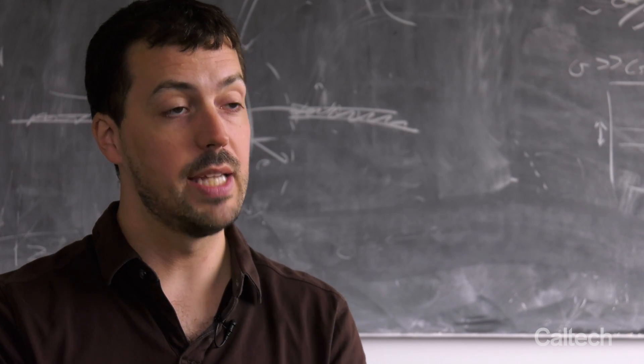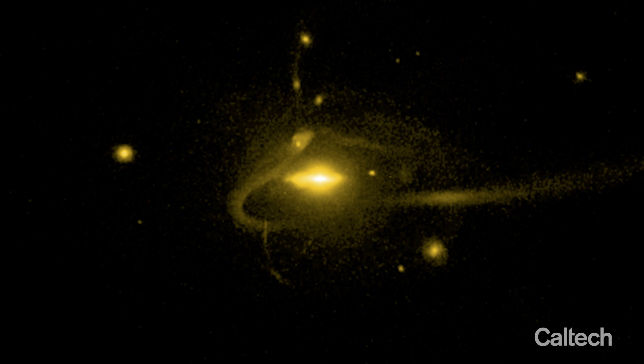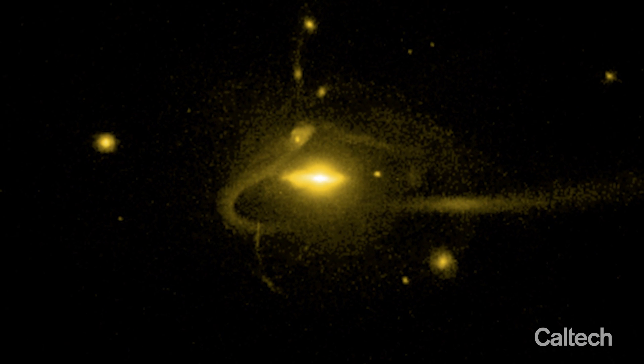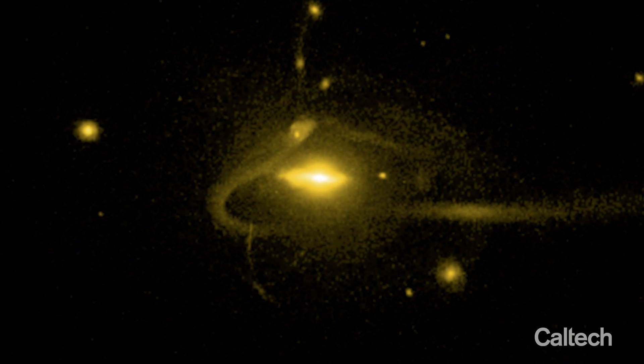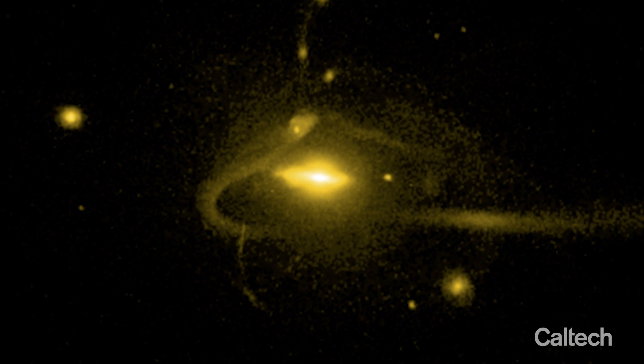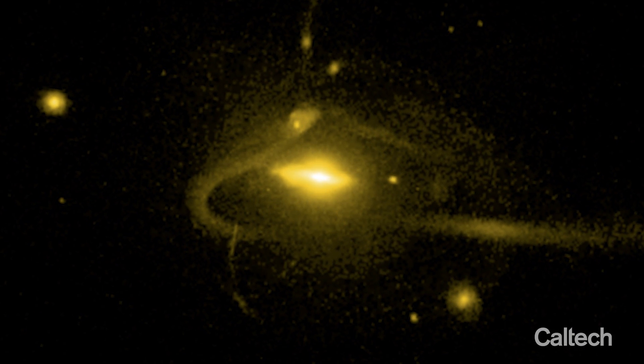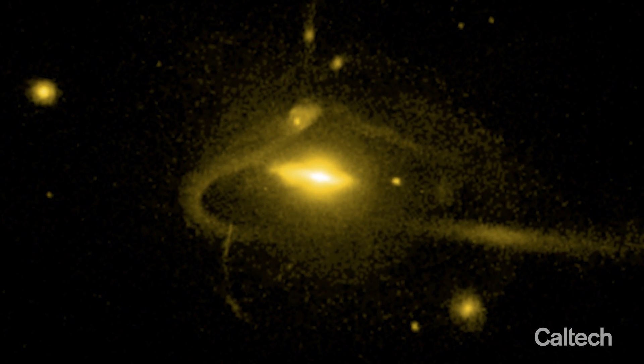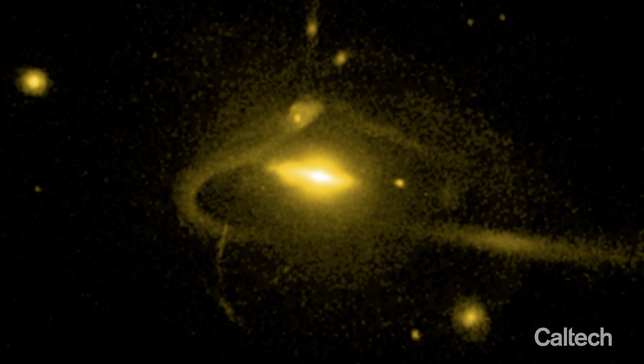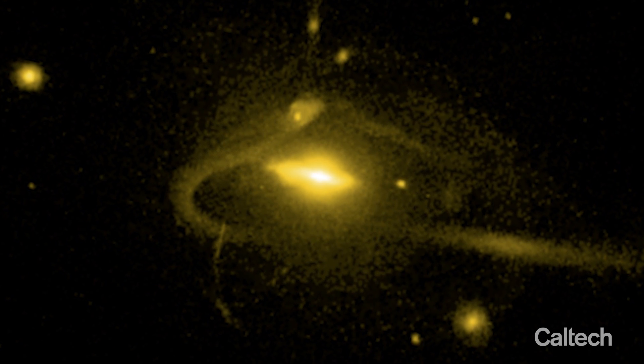We find that the dead remnants — we call it the stellar halo — around the Milky Way, a diffuse sort of cloud of stars, is actually the graveyard of all these dwarf galaxies that got torn apart.